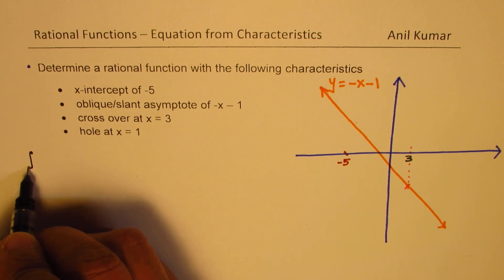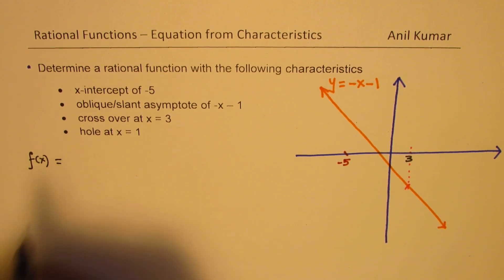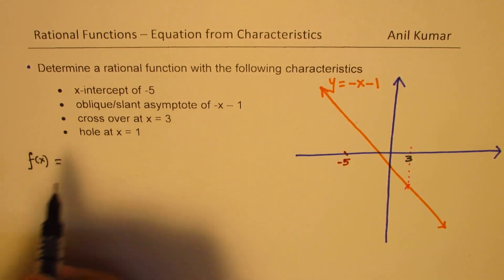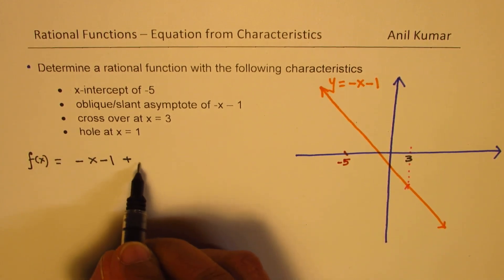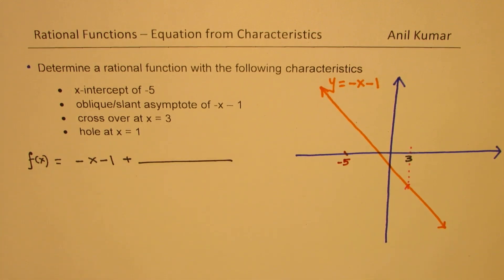So first step could be that the function itself, since we know oblique asymptote is minus x minus 1, so we'll just keep that separate. And now here is our rational function.